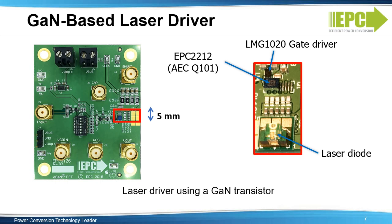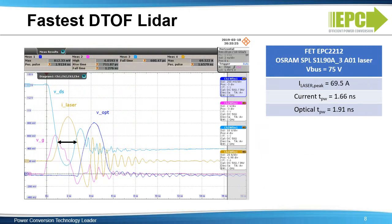This board is also available in a high-current version, which uses the EPC-2001C eGaN FET and can supply double the peak current with a minor increase in minimum pulse width. The EPC-9126 laser driver board uses a Texas Instruments LMG-1020 gate driver dedicated to LIDAR applications. This driver is extremely fast and comes in a chip-scale package to complement the low inductance of the GaN transistor package. The layout was designed to reduce PCB inductance to approximately 500 picohenries.